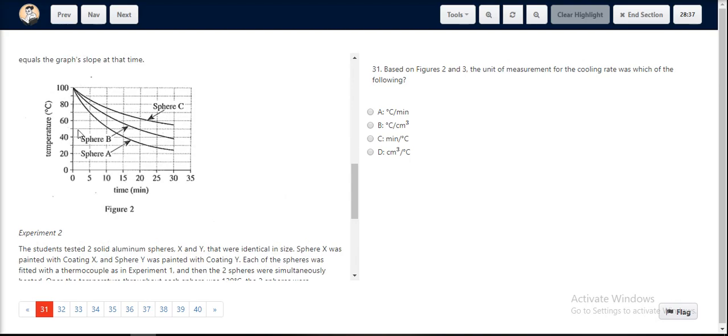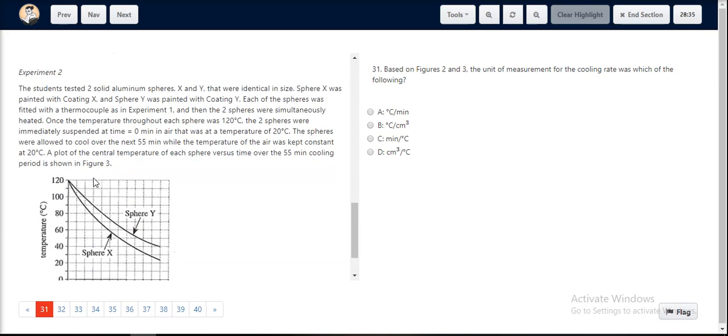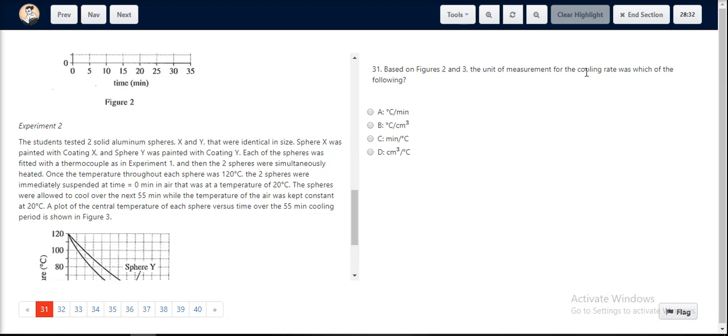Hence, based on this information from figure 2 and figure 3, the measurement for the cooling rate is degrees Celsius per minute. And this is given by option A, making it the correct choice.